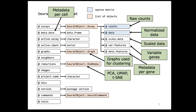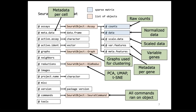One slot that is not very frequently used but I find very convenient is the commands slot. In the commands slot, you can store all the commands that have been run to generate the Seurat object you're looking at. So if a colleague gives you a Seurat object without a script, you can look in the commands slot to find the history of all commands used to generate that particular object — it can be very convenient to figure out the history of a Seurat object.